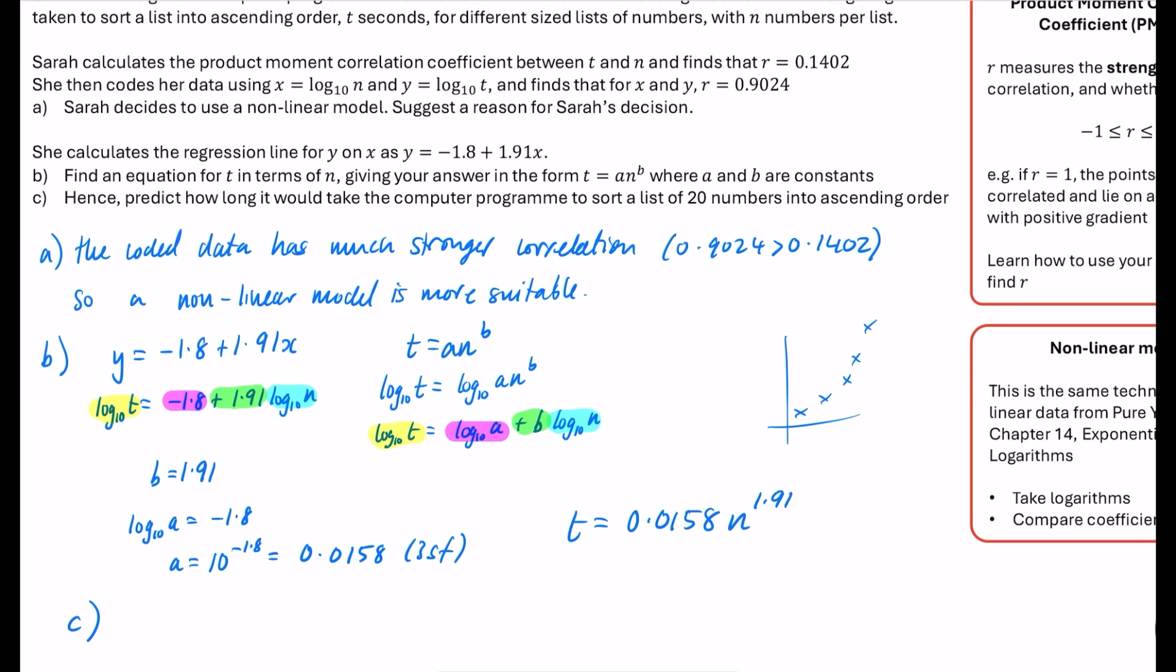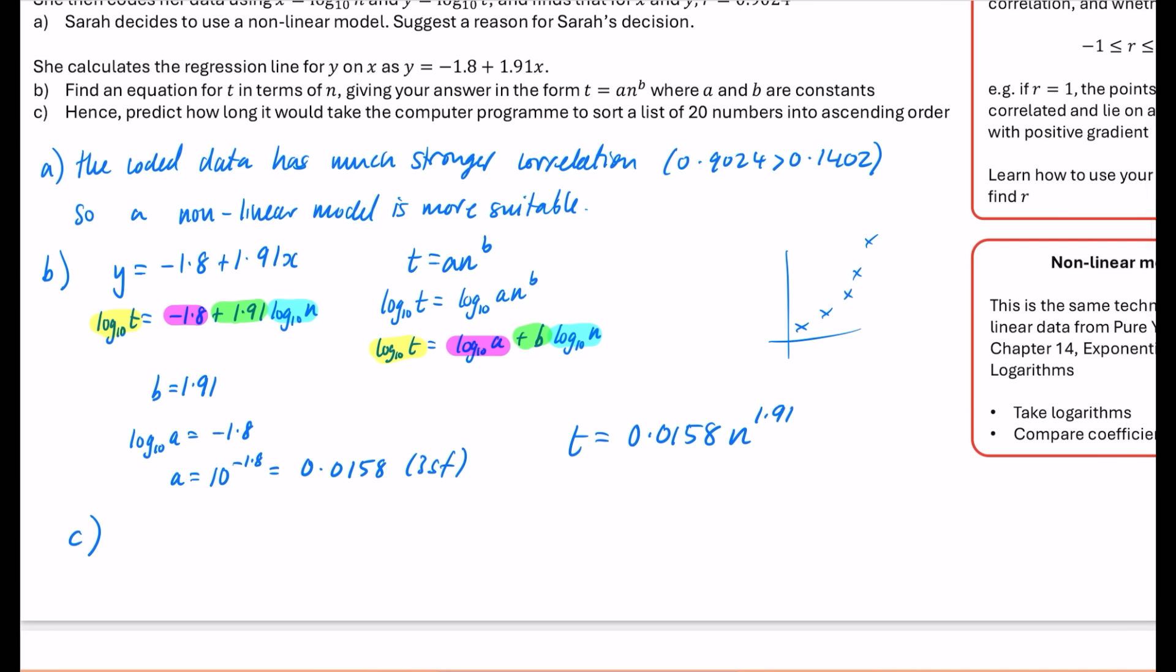Okay. So now we're going to do part C of the question, which says, hence predict how long it would take the computer programme to sort a list of 20 numbers into ascending order. So n is equal to 20. So I'll figure out what t is equal to. I'm literally going to do 0.0158 times by 20 to the power of 1.91, which is 4.83 seconds to three significant figures. Now, if you didn't use the rounded version, if I times that by 20 to the power of 1.91, you get 4.84. So if you use the non-rounded version, you would get 4.84. The mark scheme would accept both of them. So if you've got 4.84, perfectly fine as well.